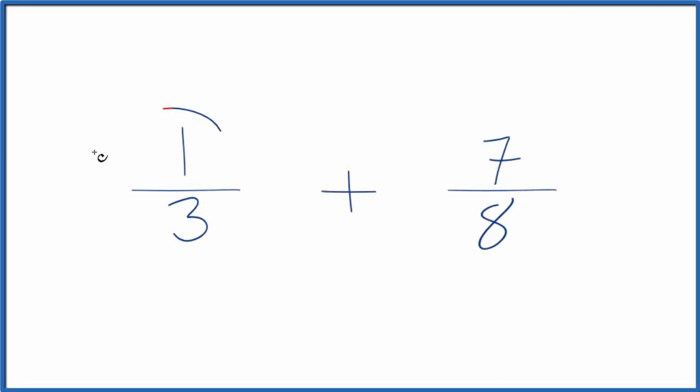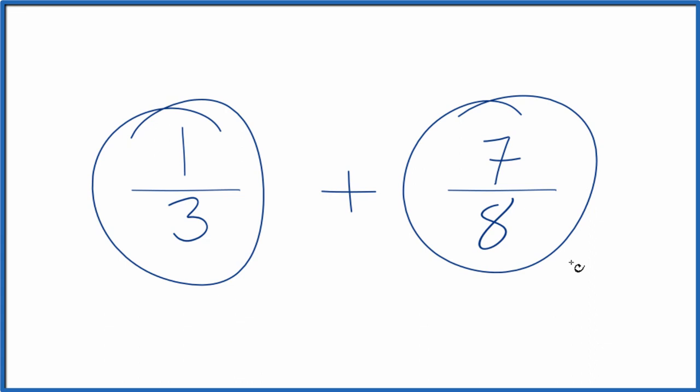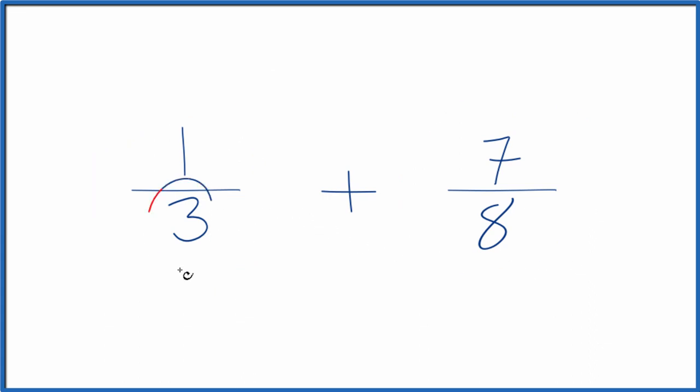Here's how you can add the two fractions, one third plus seven eighths. The key is that we can get these denominators here to be the same. If we do that, then we can just add the numerators together and we'll have the sum for one third plus seven eighths.